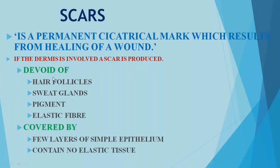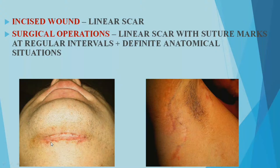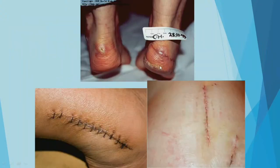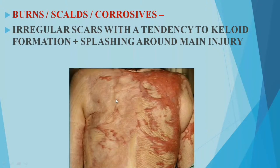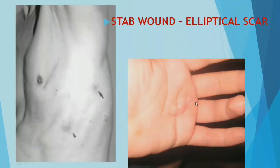Scar characteristics depend on the type of wound. Incised wounds with sutures or staples produce distinctive scars. Burn injuries, acid attacks, and chemical injuries heal with characteristic scars. Stab wounds leave elliptical scars. The nature of the scar — its shape, location, and depth — can help confirm identity. Dermabrasion, caustic substances, carbon dioxide snow, electrolysis, surgery, or laser exposure can produce scar formation.